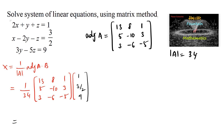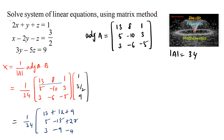Computing the multiplication: Row 1: 13(1) + 8(3/2) + 1(9) = 13 + 12 + 9 = 34. Row 2: 5(1) + (−10)(3/2) + 3(9) = 5 − 15 + 27 = 17. Row 3: 3(1) + (−6)(3/2) + (−5)(9) = 3 − 9 − 45 = −51. So X = (1/34) × [34; 17; −51].